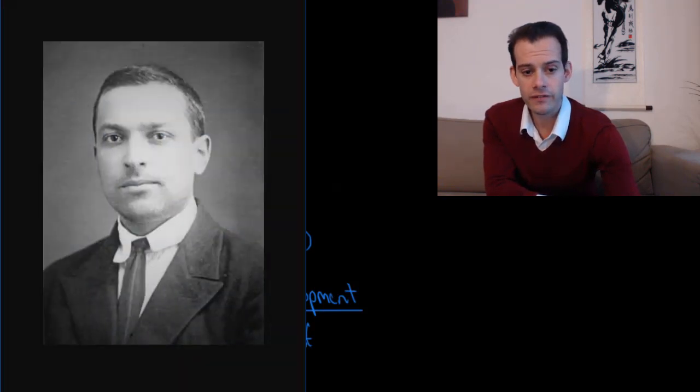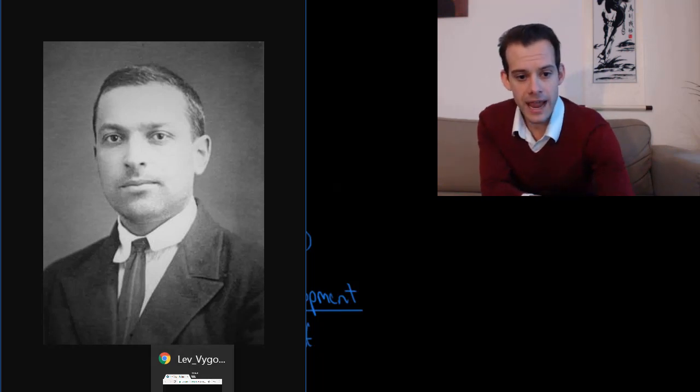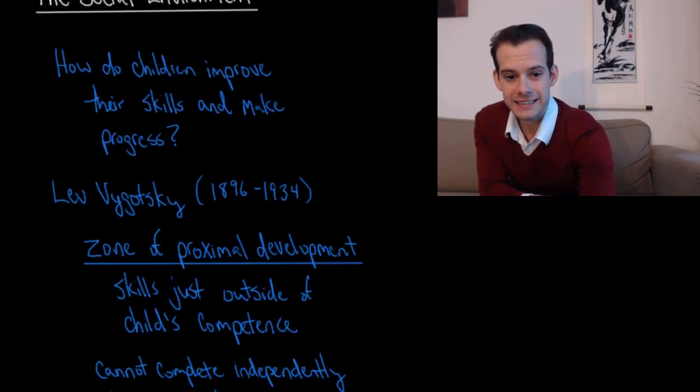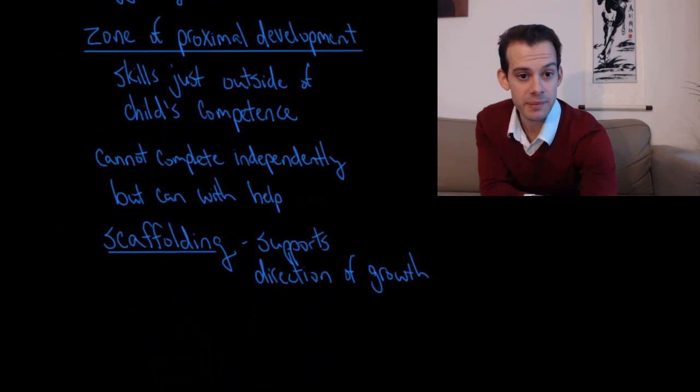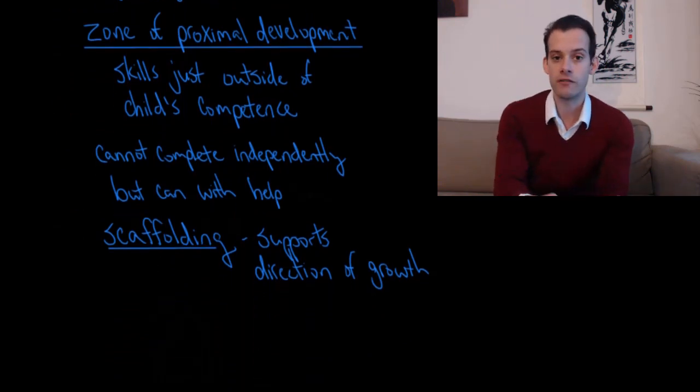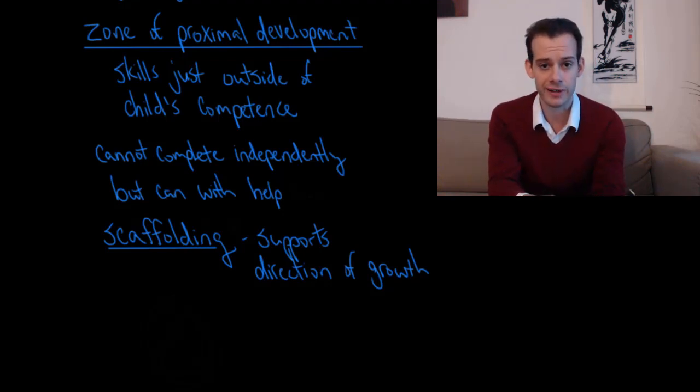And one of Vygotsky's ideas is that children are able to progress just at the edge of their ability and he called this the zone of proximal development. And so this refers to any of the skills that are just outside of a child's current level of competence. And so they're not able to complete these tasks independently. But if they get a little bit of help from somebody, whether it's a peer or a parent or a teacher, then they're able to complete this task.